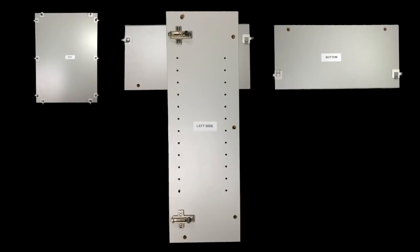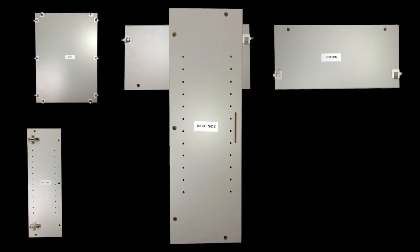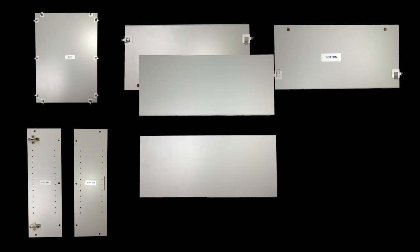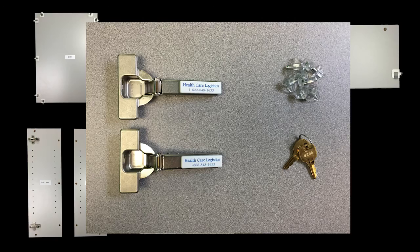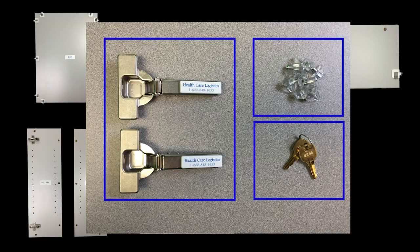When you open the box you should find the back panel, the top panel, the bottom panel, the left panel, the right panel, a pair of shelves, and a bag containing a pair of door hinges, shelf pins, and a set of keys.